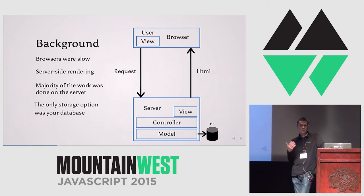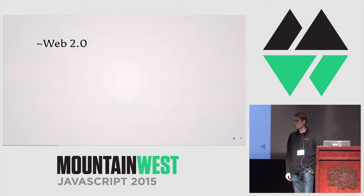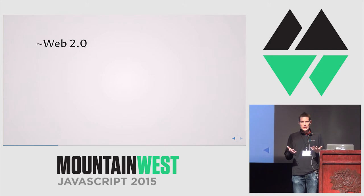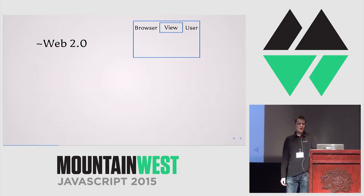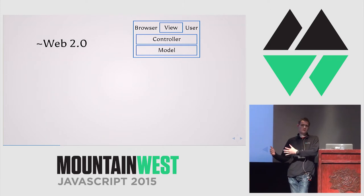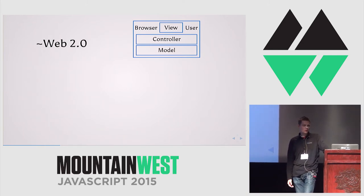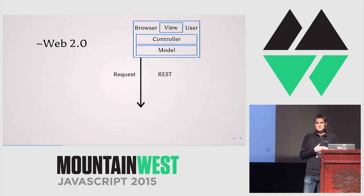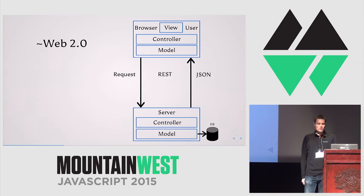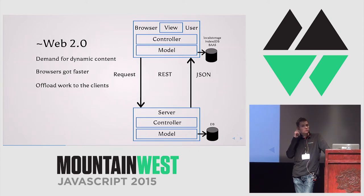Also, you were limited on storage options. The only place where data was stored was in your database on your server. In web 2.0, we saw the demand for dynamic content — the demand to collaborate on the web. We needed faster apps that could change quickly in response to user input. In this paradigm, we shifted a lot of work to the browser — work for rendering templates and gathering data, organizing it in JavaScript. You've got JavaScript-heavy apps. We also saw the emergence of REST, so you make requests for your data, get the data back, and it's rendered on the client. This happened because browsers got faster, and CPUs on users' devices got faster, so you could offload and distribute work to the clients. We also got more options for storage: local storage, IndexedDB. Backend as a service emerged with Firebase and GoInstant — they may rest in peace — and other companies like that.